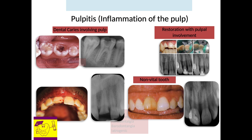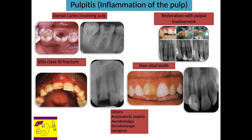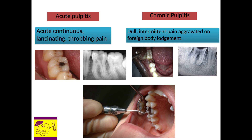Involvement of the pulp leading to inflammation is called pulpitis. Pulpitis can occur as a sequelae of progressive dental caries, iatrogenically due to placement of a restoration, accidental exposure of the pulp during cavity preparation, trauma of the tooth leading to fracture of the crown exposing the pulp, and also in a non-vital tooth. Clinically, the signs and symptoms vary between acute and chronic pulpitis.